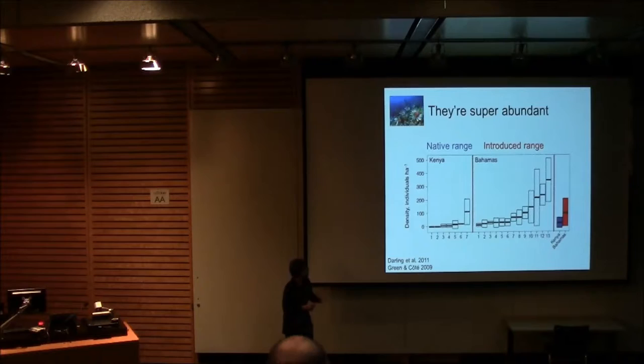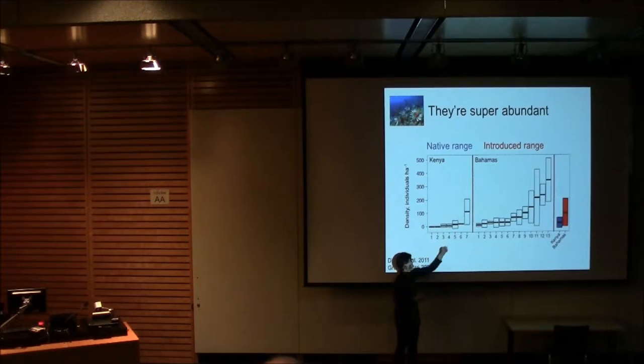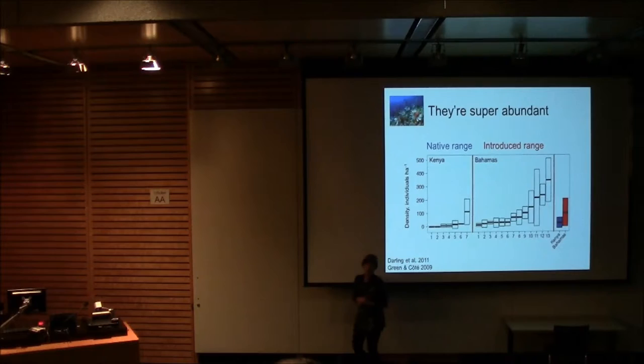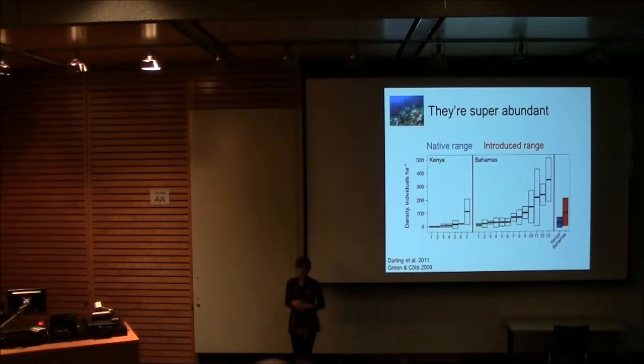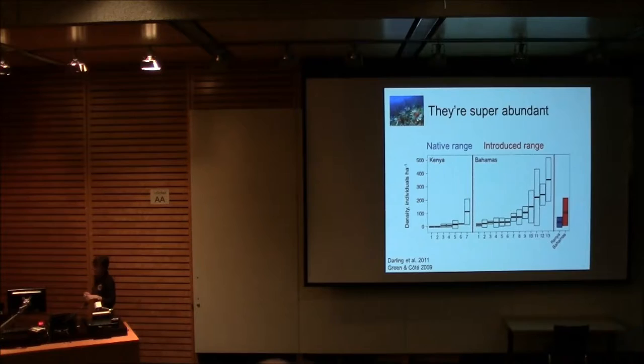So we came up with the first comparison of lionfish in their native range and in the introduced range. And you see the results here. This is density. You can see that in the native range in Kenya, most of the reefs have very few lionfish. You can compare that to the density that they reach in the Bahamas. So the averages are at the end, blue is for the native range, red is for the introduced range.